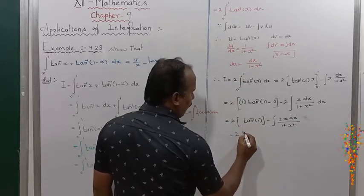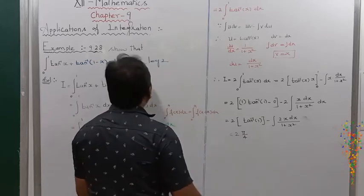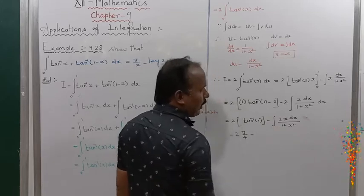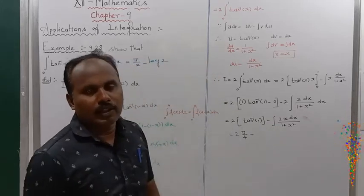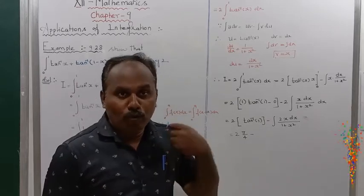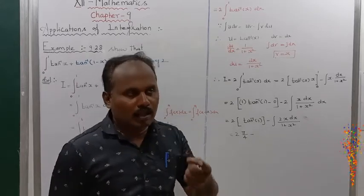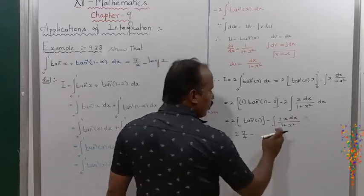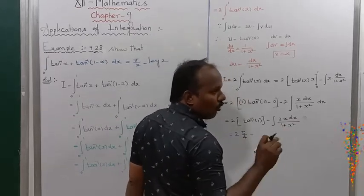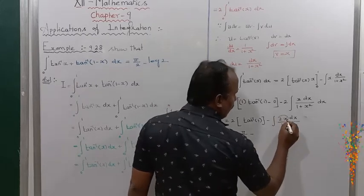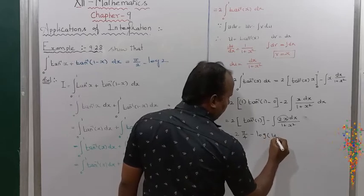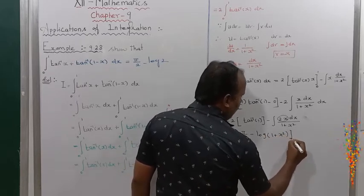Now tan inverse of 1 equals pi by 4. So that equals 2 into pi by 4. For the remaining integral: the denominator is (1 plus x squared), and differentiating gives 2x in the numerator — so taking the denominator as a log, the integral of 2x/(1 plus x squared) dx is log of (1 plus x squared). The answer is: log of (1 plus x squared), with limit value 0 to 1.